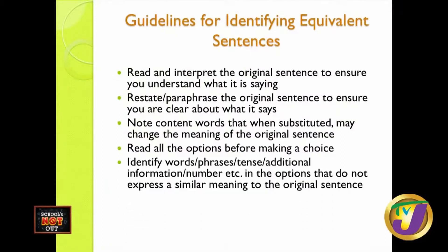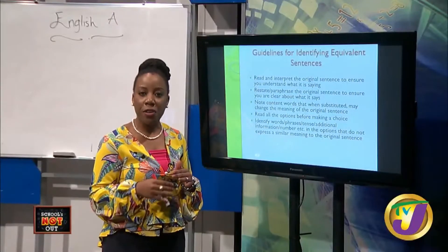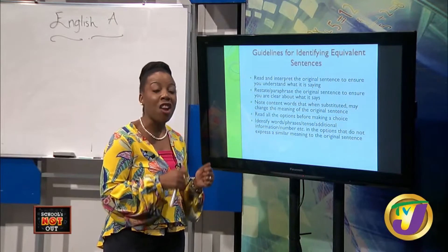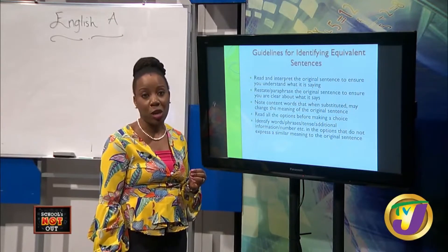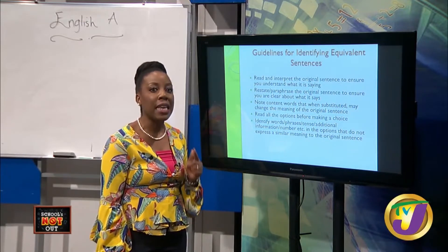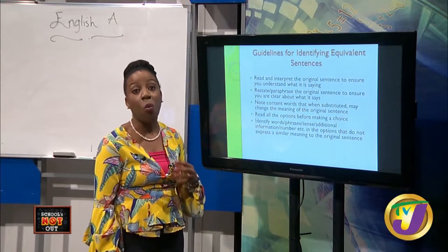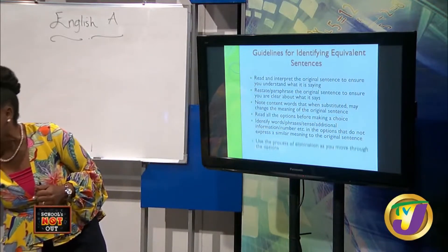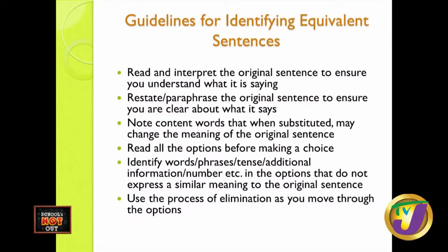You are also encouraged to identify words, phrases, additional information, number, etc. in the options that do not express a similar meaning to the original sentence. As you move through the options, begin to justify for yourself why some options are not considered equivalent expressions. Justification is key because it helps you make a definitive decision. You are also to use the process of elimination as you move through the options — it makes for an easier finishing of the paper.